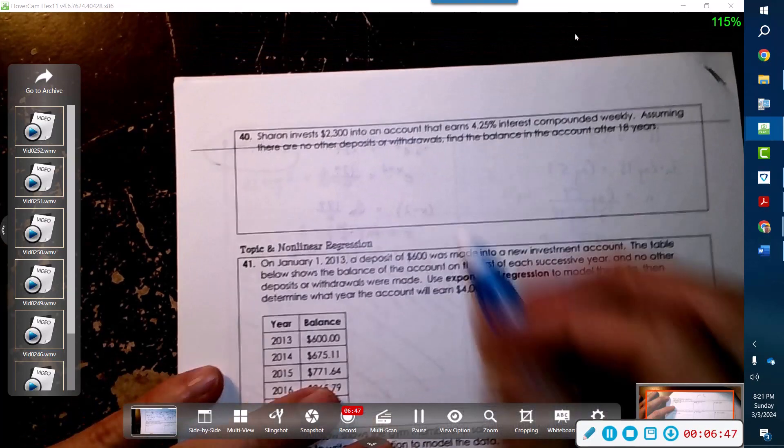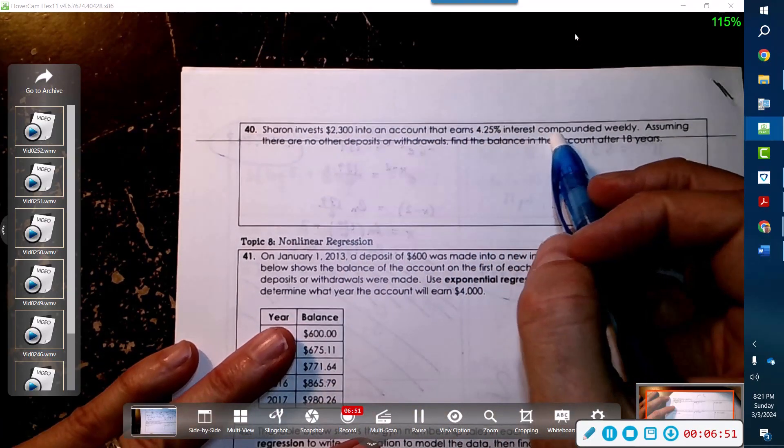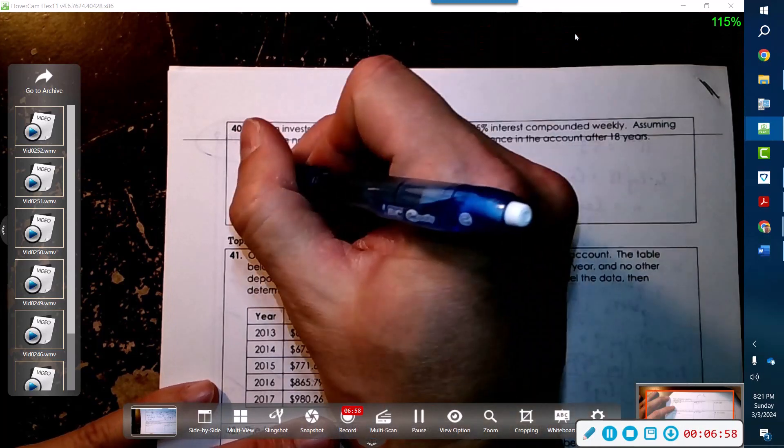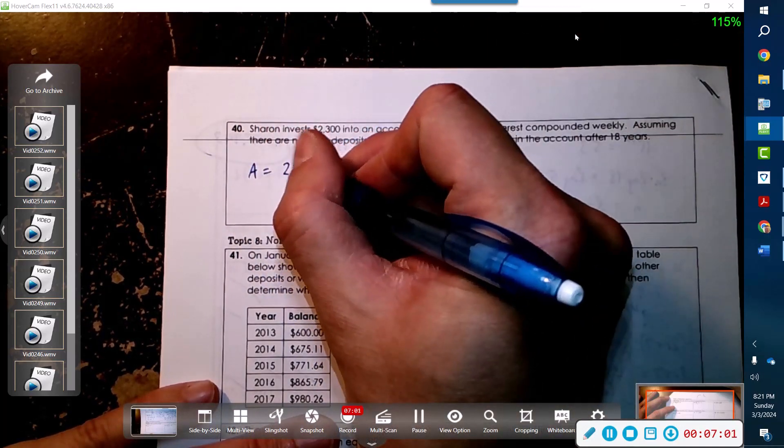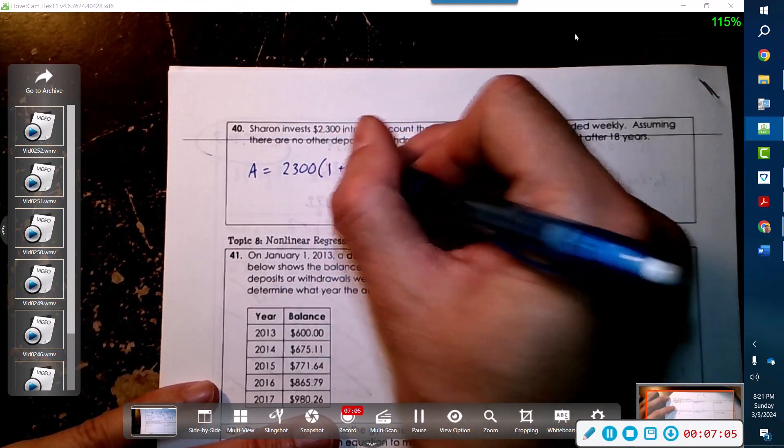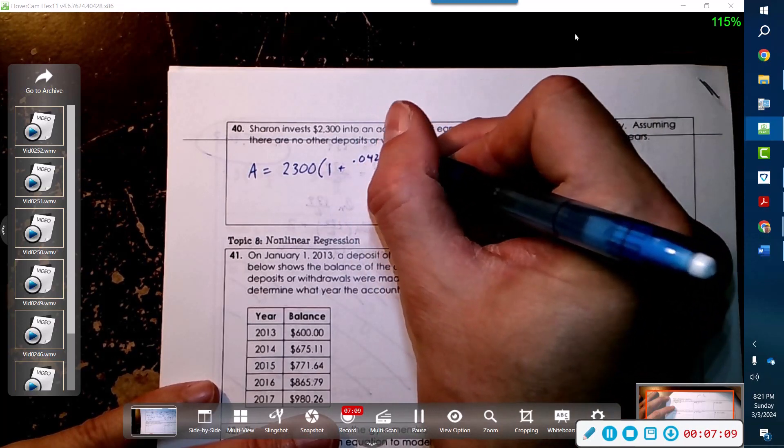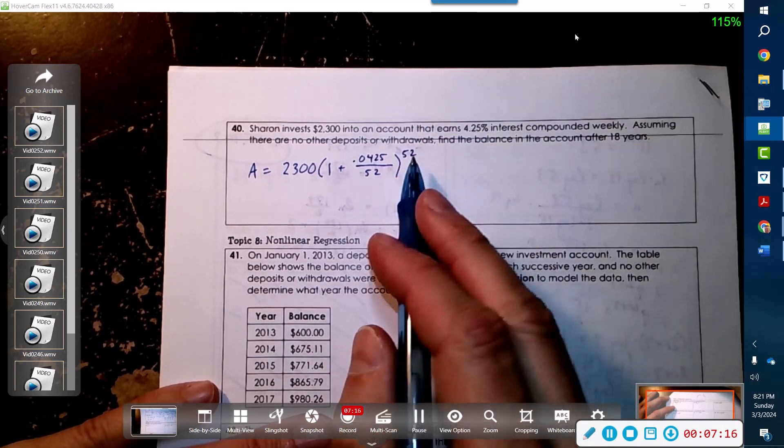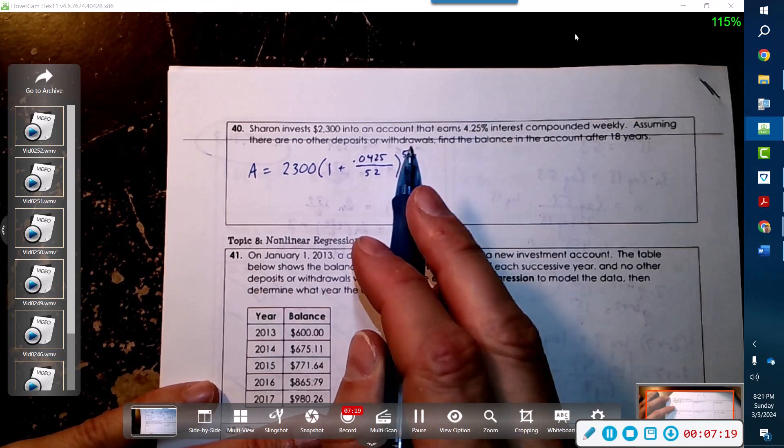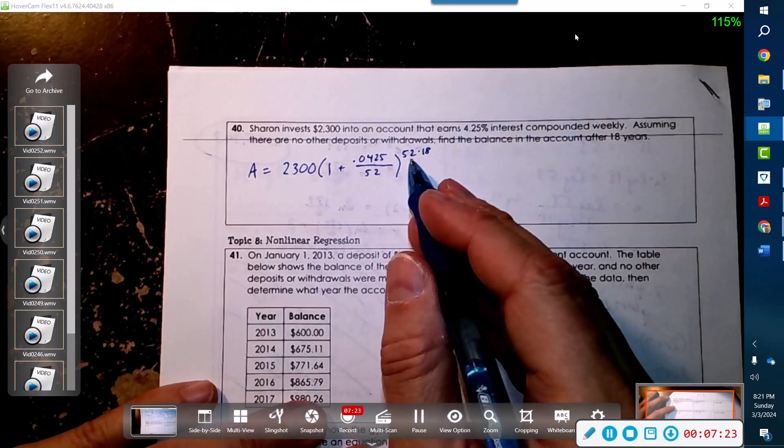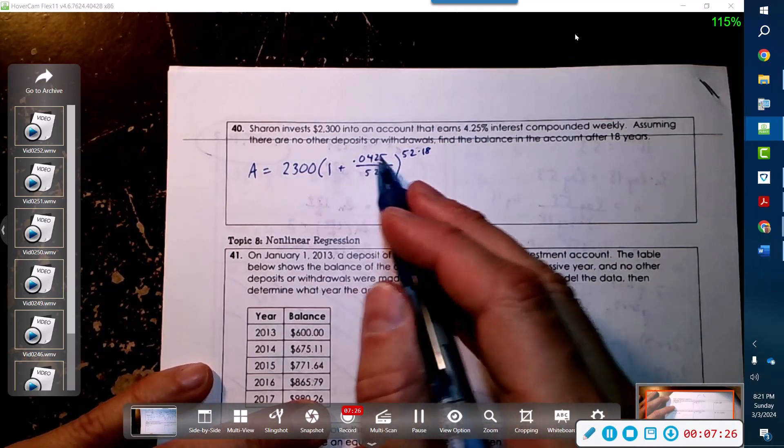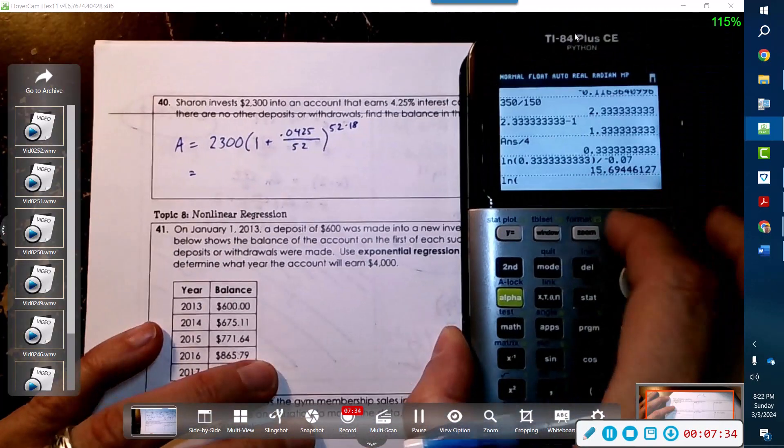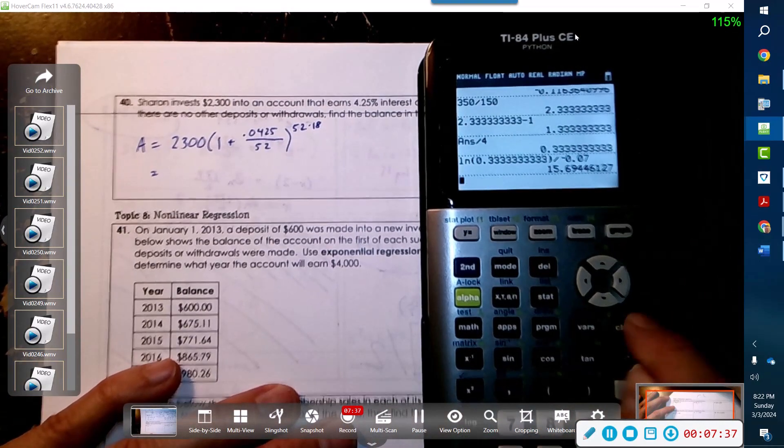Sharon invests $2,300 into an account that earns 4.25% compounded weekly. Assuming there are no other deposits or withdrawals, find the balance after 18 years. This is one of the easy ones. We start with 2,300. It earns 0.0425 interest divided by 52 times every year, and we're doing it for 18 years. You basically split that percentage over every week - they compound it every week. It's my understanding that in the financial world, everybody pretty much does compounding continuously.